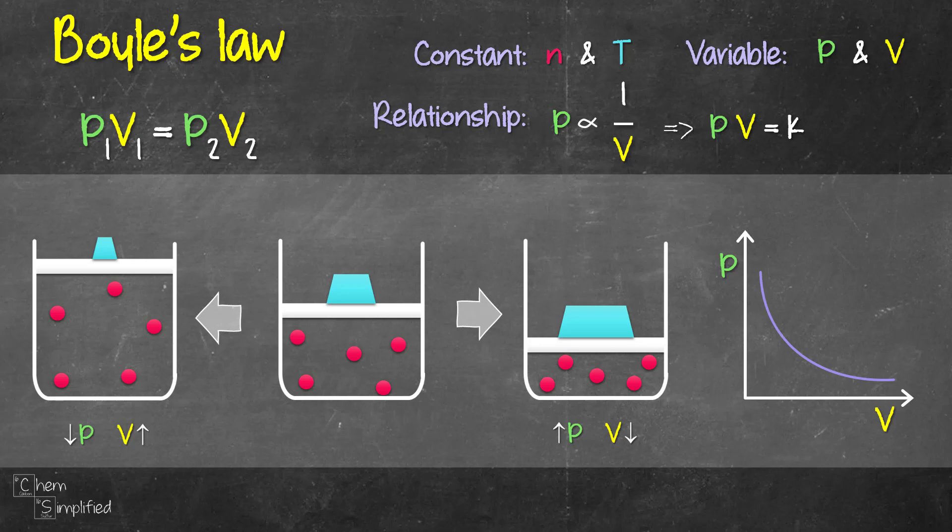There's no specific unit that we have to use for pressure and volume as long as both units are the same. The unit for P₁ and P₂ should be the same, and the unit for V₁ and V₂ should be the same.